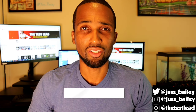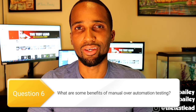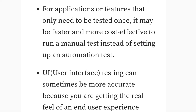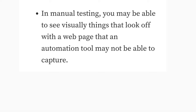Number six: what are some benefits of manual testing over automation testing? For applications or features that only need to be tested once, it may be faster and more cost-effective to run a manual test instead of setting up an automation test. UI or user interface testing can sometimes be more accurate because you are getting the real feel of an end-user experience. Finally, in manual testing you may be able to visually see things that look off with a web page that an automation tool may not be able to capture.